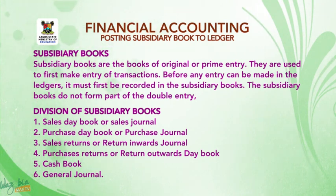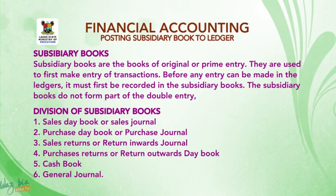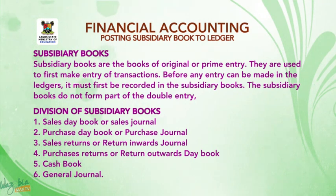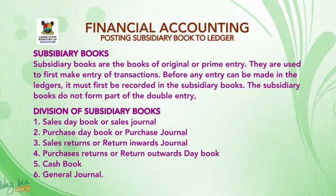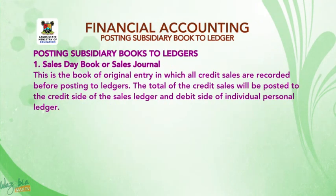Division of subsidiary books: one, sales day book or sales journal; two, purchase day book or purchase journal; three, sales returns or return inwards journal; four, purchases returns or return outwards day book; five, cash book; and six, general journal. We will now look at posting subsidiary books to ledger.